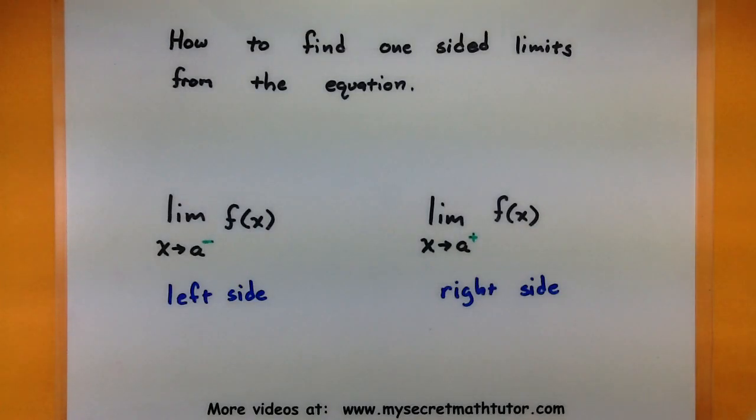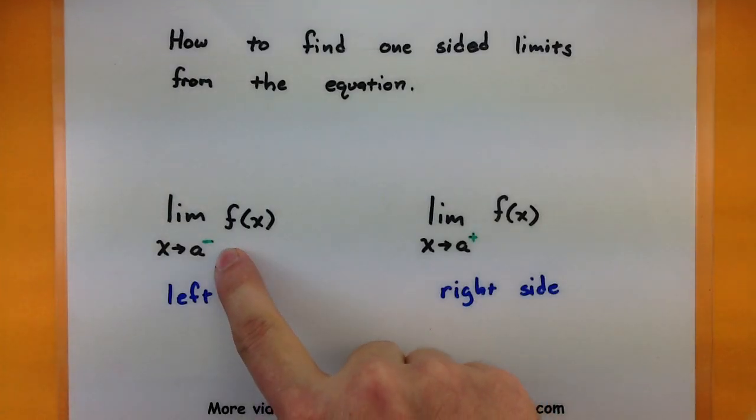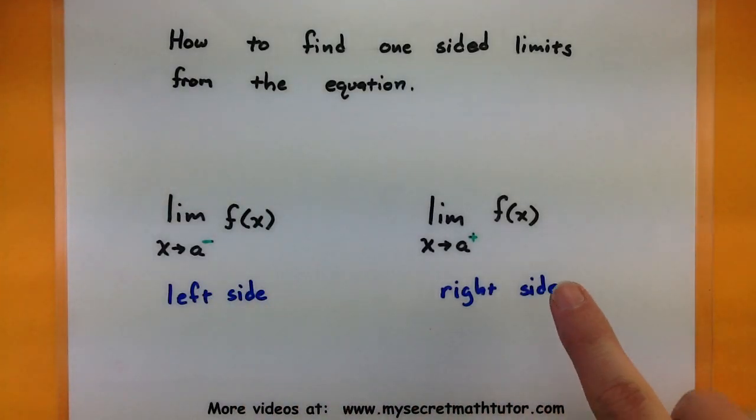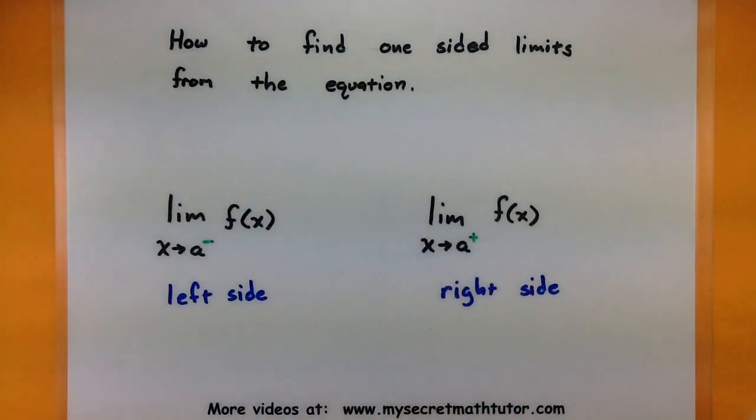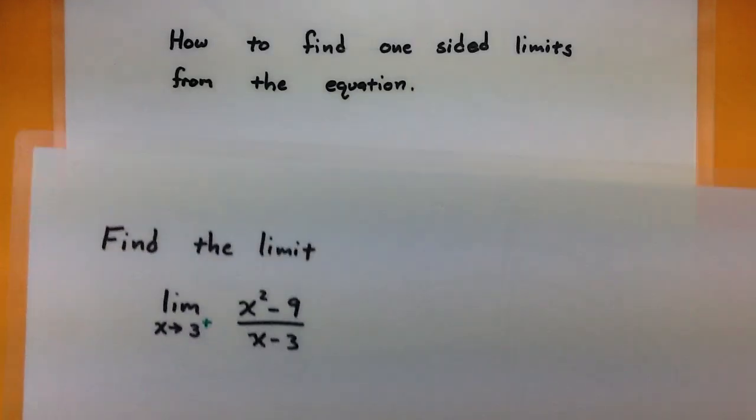Now remember, with these one-sided limits, we'll either be working as x approaches a value from the left side, or as x approaches a value from the right side. And that little symbol right next to it, either a minus sign or a plus sign, will give us a clue whether we're doing a left-sided limit or a right-sided limit. So let's go ahead and jump into some examples.